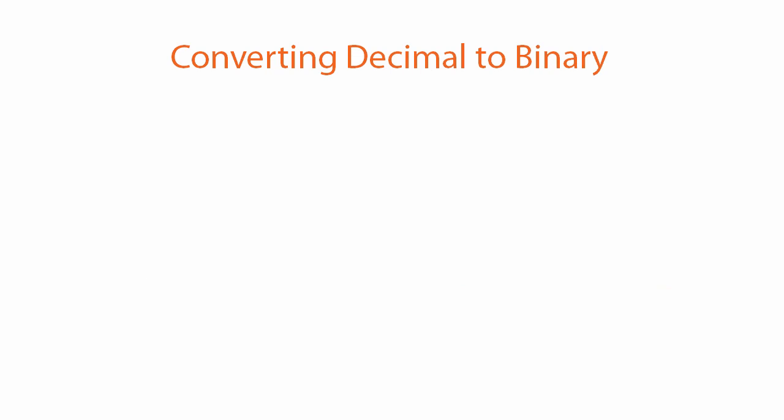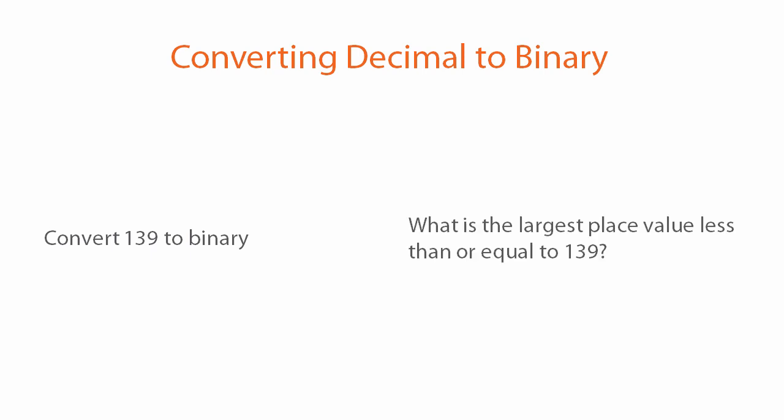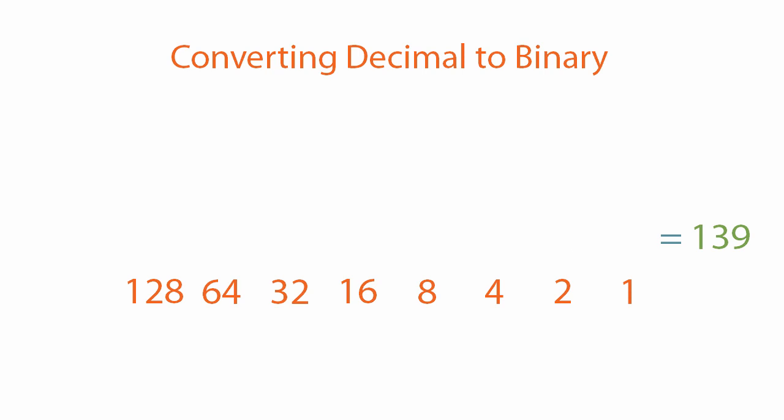Now let's look at the reverse: converting a decimal number to binary. Let's say we need to convert 139 to binary. Think of the binary place values: 128, 64, 32, and so on. The first question to ask is: what is the largest place value less than or equal to 139? That would be 128. So we put a 1 in the 128 place, essentially building the binary number bit by bit. This binary number is currently equal to decimal 128.